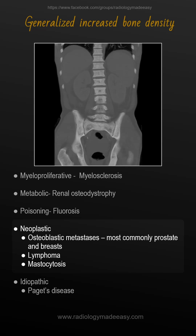Mastocytosis manifests as sclerosis of the marrow-containing skeleton with patchy areas of radiolucency, and also urticaria pigmentosa. Patients can have symptoms and signs of carcinoid syndrome. We also have to keep in mind idiopathic diseases like Paget's disease, which causes generalized increased bone density and is more commonly multifocal than generalized.